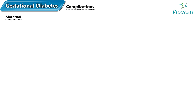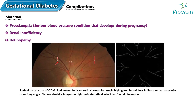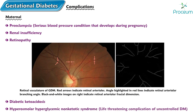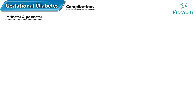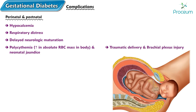Maternal complications associated with diabetes mellitus in pregnancy include preeclampsia, renal insufficiency, retinopathy, diabetic ketoacidosis, and hyperosmolar hyperglycemic non-ketotic syndrome. Perinatal and postnatal complications associated with gestational diabetes mellitus include hypocalcemia, respiratory distress, delayed neurologic maturation, polycythemia, neonatal jaundice, traumatic delivery, brachial plexus injury, and hypoglycemia, which is often due to increased fetal insulin in response to increased maternal glucose.